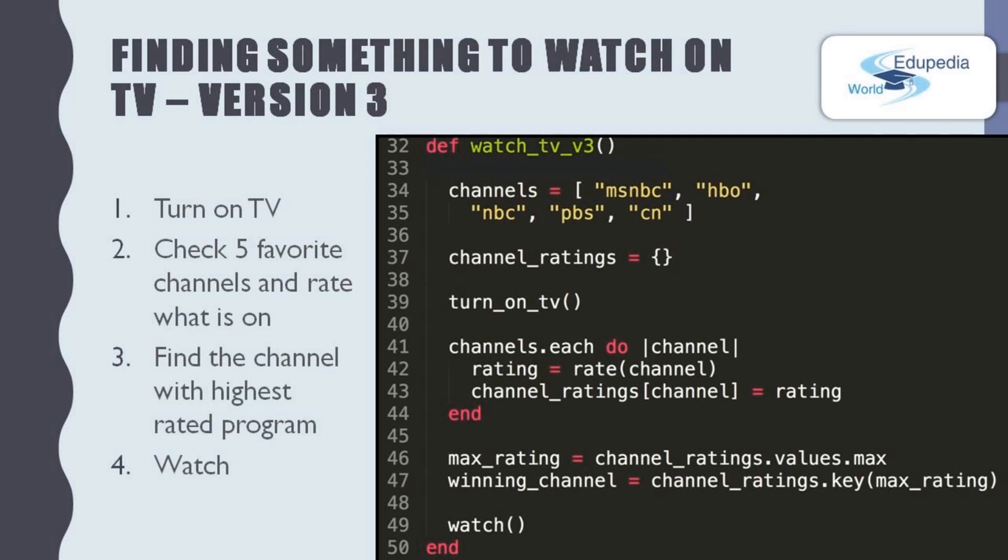From the code line 39, we call the turn on TV method our first step. And from the code lines 41 to 44, we iterate through our TV channel list. From the code line 42, we call the rate method with the TV channel and take the rating of the program in that channel. And from the code line 43, we input that rating into our empty list channel rating with the TV channel.